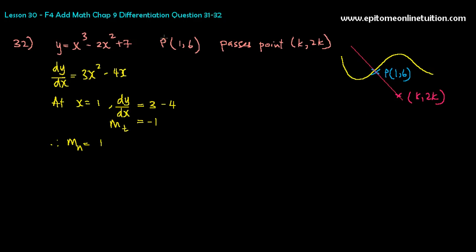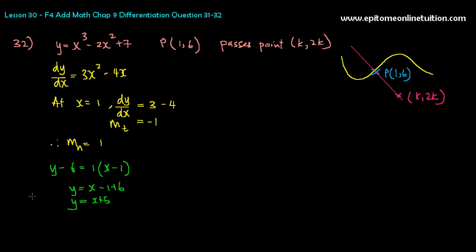The normal passes through point P at (1, 6), so you can straight away form the equation: y minus 6 equals 1 times (x minus 1). So y equals x minus 1 plus 6, therefore y equals x plus 5. That is the equation of the normal. It is good to write 'normal' next to it, because sometimes questions have many equations — normal, tangent, parallel line — and you can get confused about which is which.